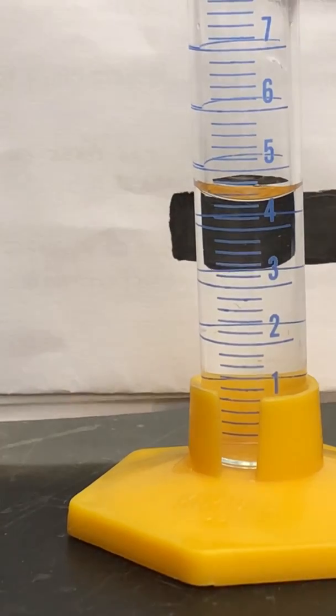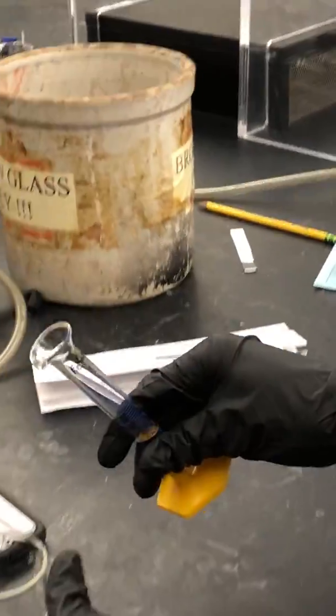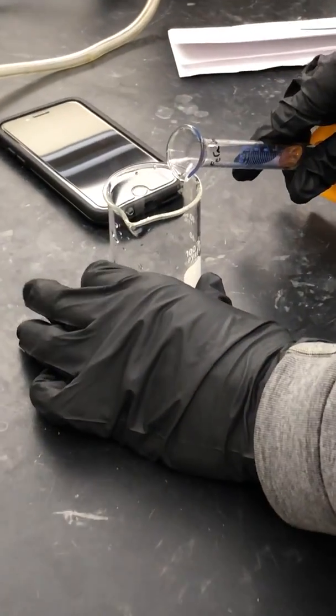We have about 4.45 milliliters here. Once we want to transfer, we're going to take our graduated cylinder, put the spout on the lip of the beaker, and then pour.